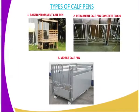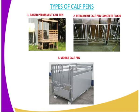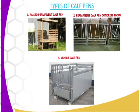Moving on to the types of pens, we have three types of calf pen. We have the raised permanent calf pen — you can see on the first diagram, you can construct it using timber. The second type is the permanent calf pen with concrete floor, which has a permanent concrete floor. Then we have the third one, the mobile calf pen. The mobile calf pen has wheels and therefore it can be moved from one position to another.